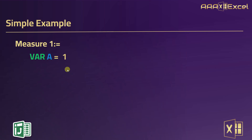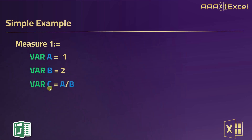Then I'm going to declare another variable — let me call it variable 'b' and assign value 2 to it. Then I'll declare another variable, let's say variable 'c'. I'm going to use both variable 'a' and 'b' to determine the value for variable 'c'. I'm going to divide 'a' by 'b' and store the result into variable 'c'.